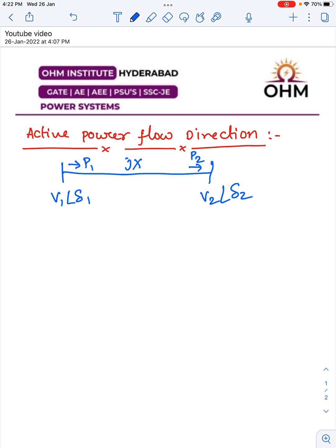The power delivered at bus 1 is P1 and power received at bus 2 is P2. Assuming power flows from bus 1 to bus 2, the expression is: P1 = P2 = (V1V2/X)sin(δ1 - δ2).